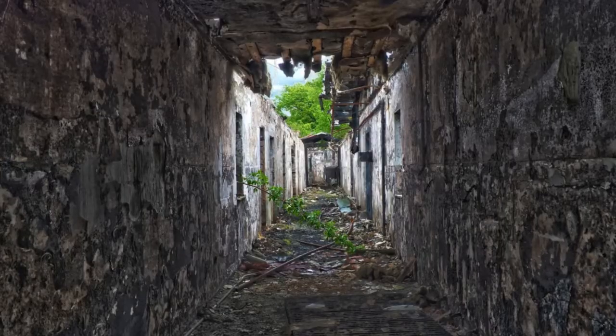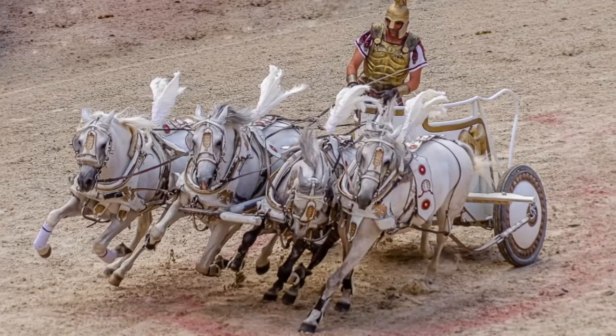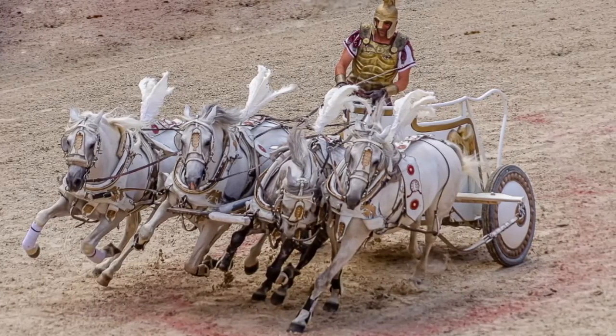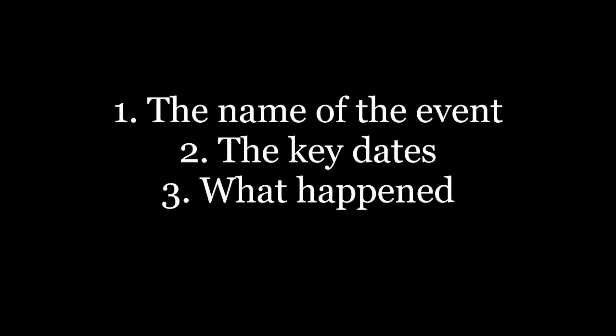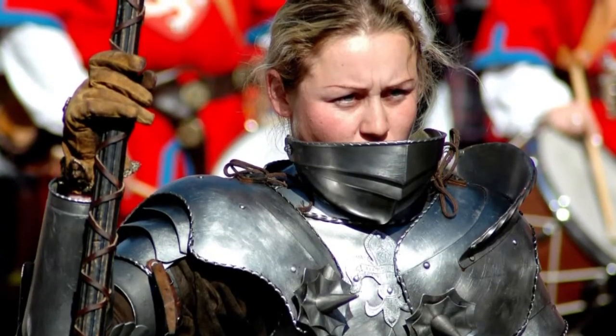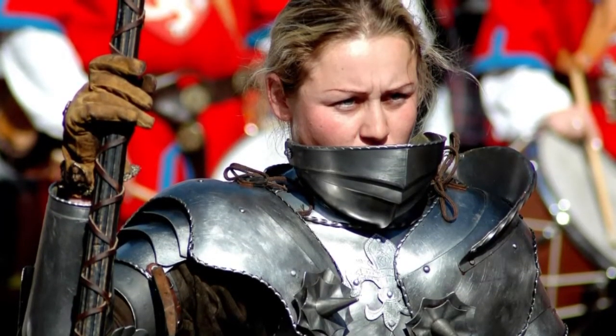The most important first step in understanding causes and consequences is to know what historical event you're talking about. It is only once you know what event you're looking at that you can begin to investigate what caused it and what its consequences were. To do this, make sure you can identify: first, the name of the event; second, the date during which it occurred; and third, what specifically happened during this event. Once you know these things, you're ready to find out its causes and consequences.